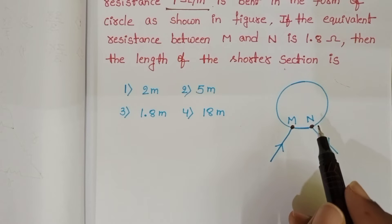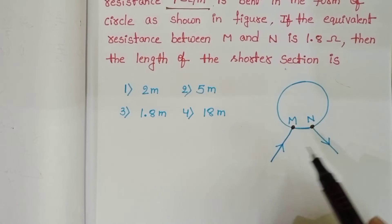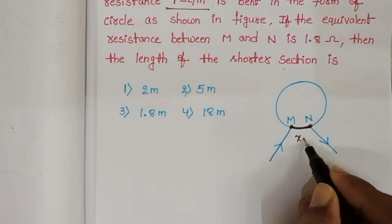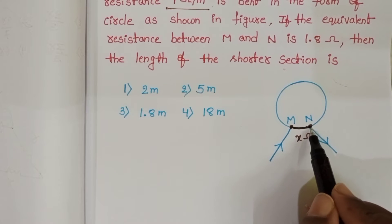We want to find out the length of the shorter section. Let X ohm be the resistance of this part.